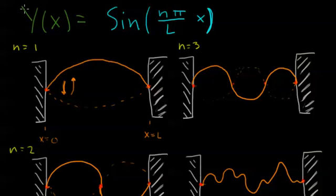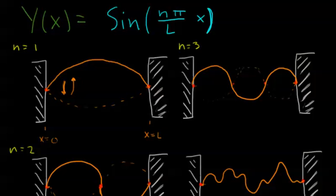So in the last video, we arrived at this function here — this set of functions, one function for each value of n. And we said that this is what satisfies our boundary conditions: that each end of the string, where the string has length l, is fixed. And here I've drawn some example functions for n equals 1, 2, and 3.